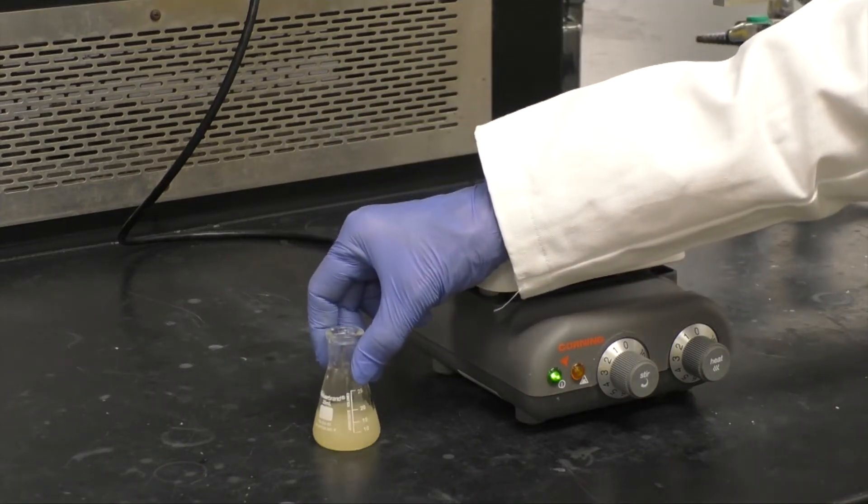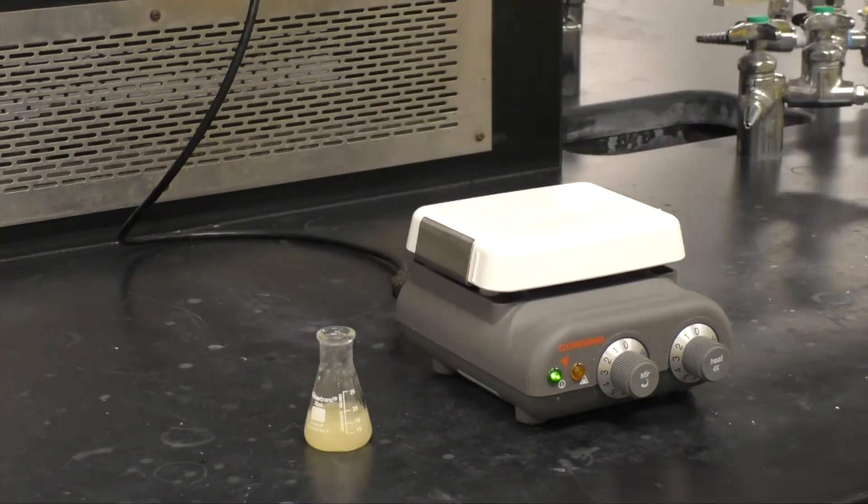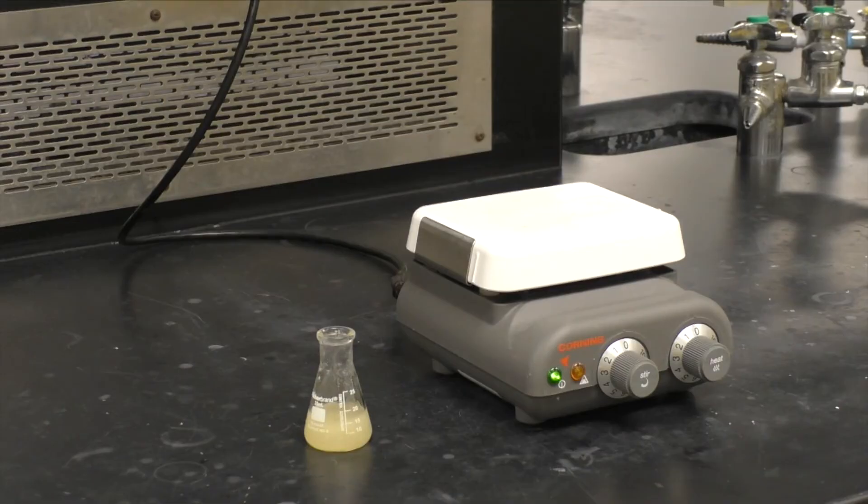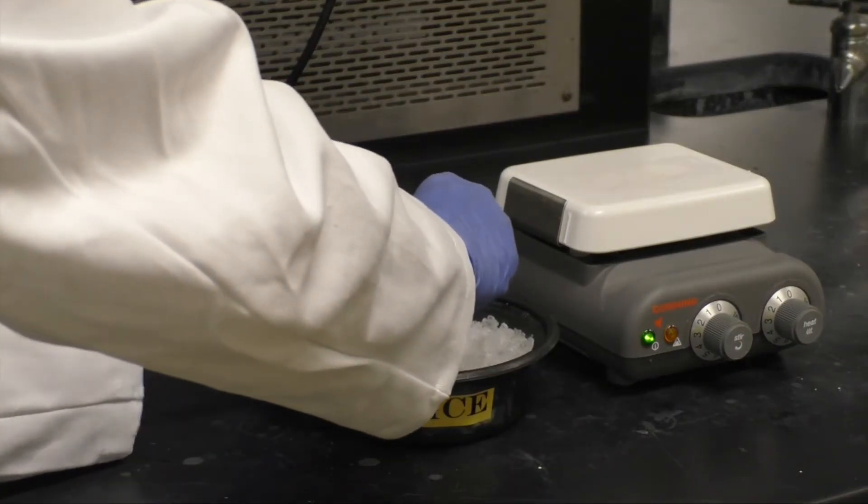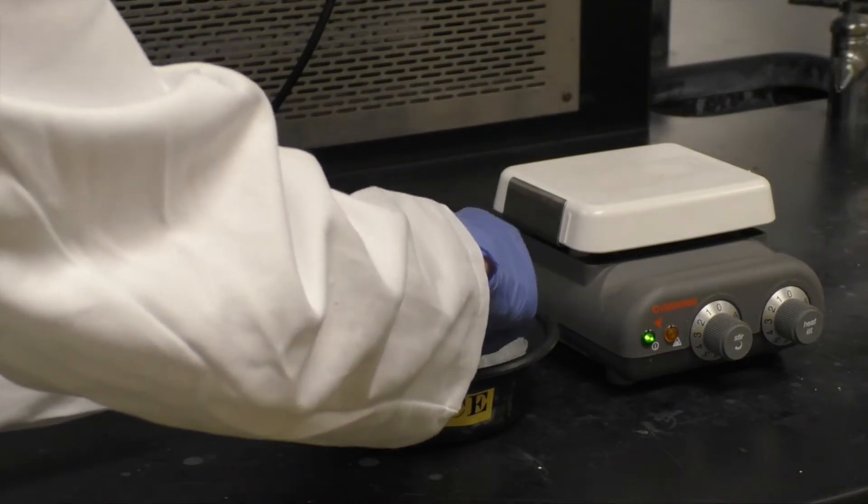Remove the flask and place it on the bench to cool to room temperature. Do not disturb the flask and crystals will form. Then place the flask in an ice bath for 30 minutes to allow crystallization to continue.